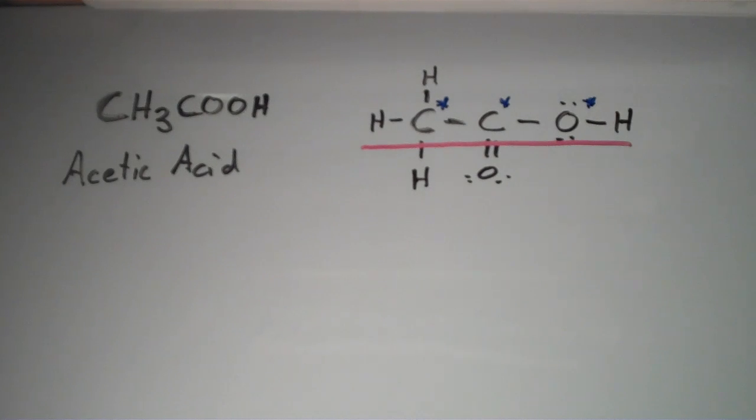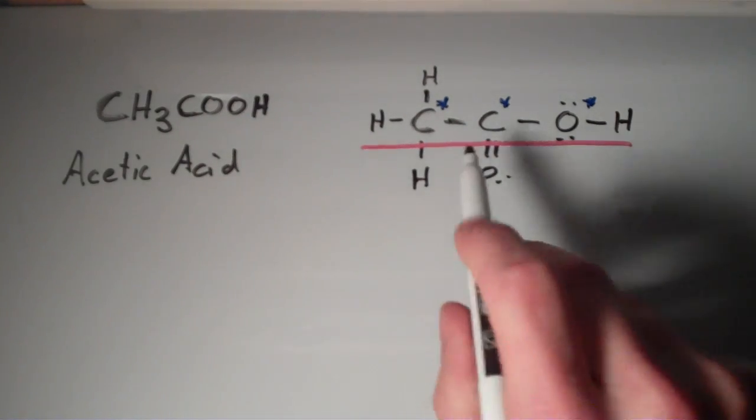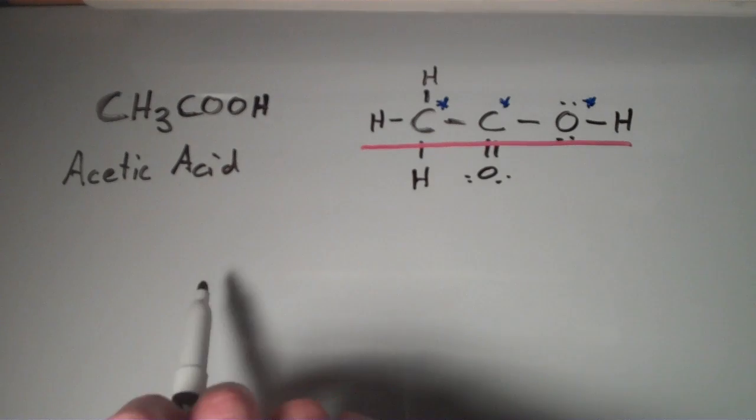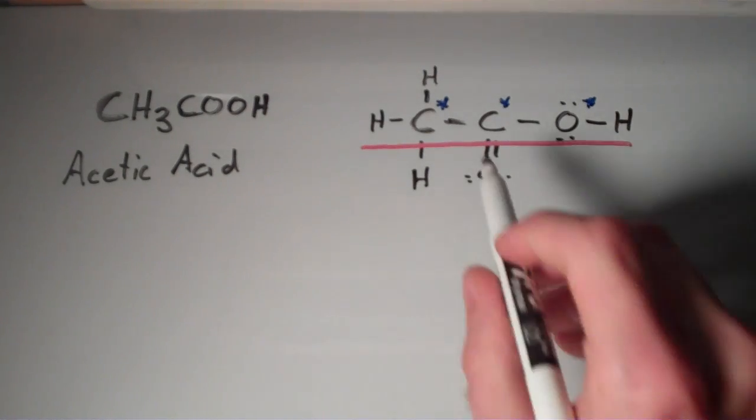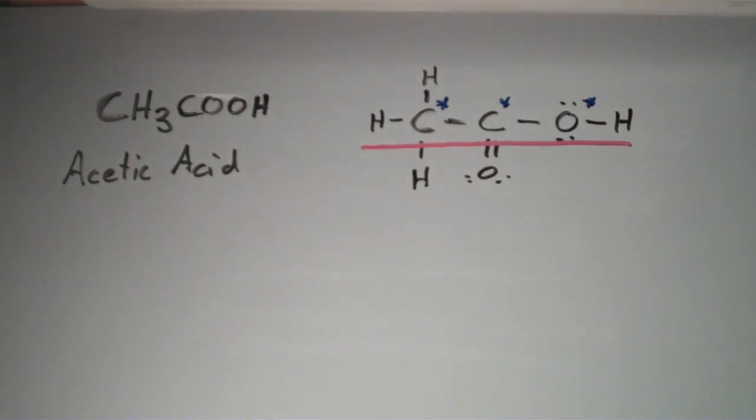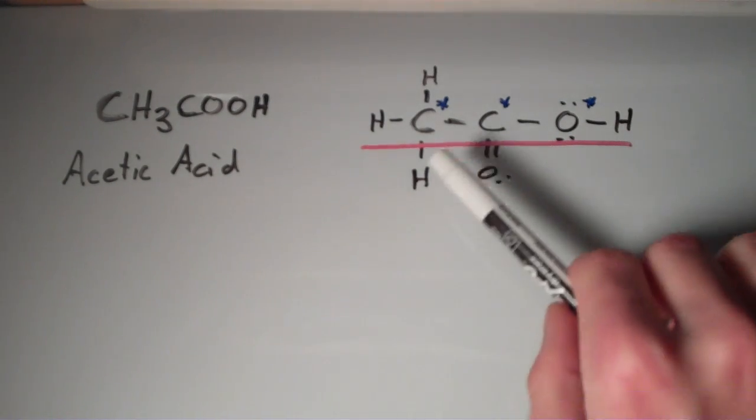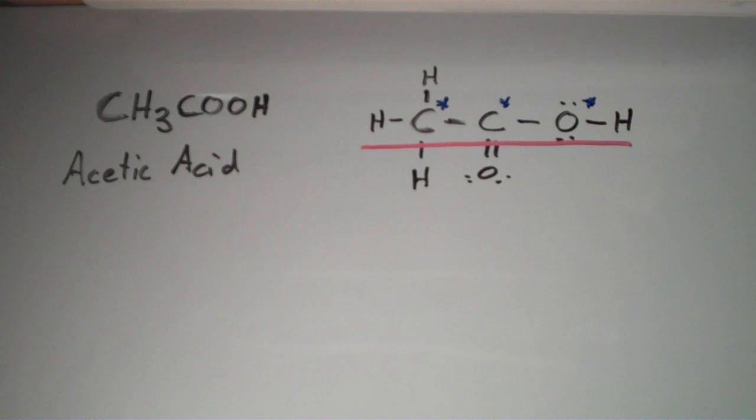So if we look at our first central atom, that's this carbon here, I'm just going to go left to right. This central atom has four electron groups on it. VSEPR theory tells us that any central atom with four electron groups is going to have a tetrahedral shape.